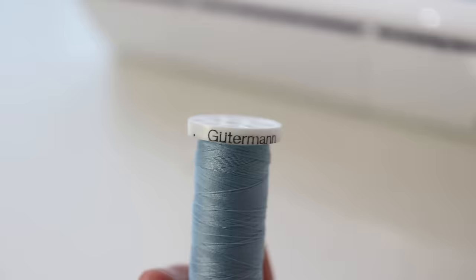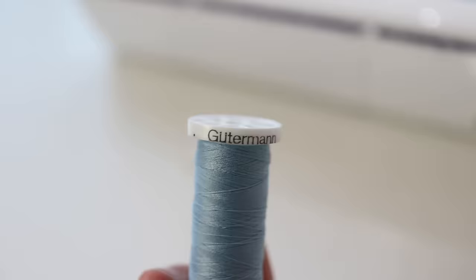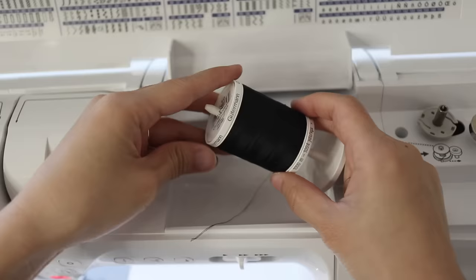Sewing machines need two threads attached to work. There's the top thread that is on the spool and the bottom thread that is on a bobbin. The brand of thread I like to use is Gutermann and it is 100% polyester.